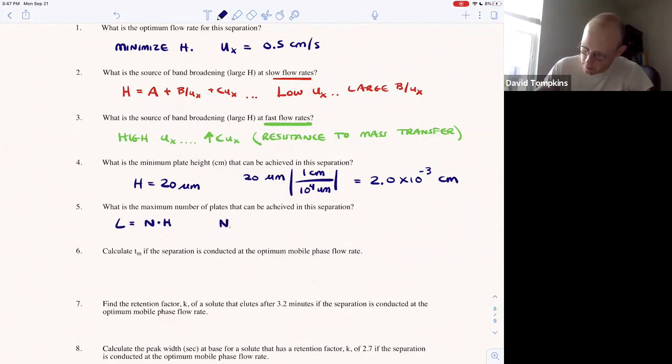So the maximum number of plates is inversely proportional to the minimum plate height. And we were told above the length of the column is 30 centimeters.